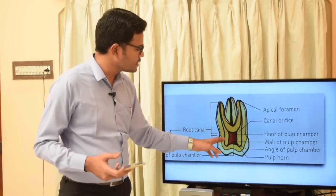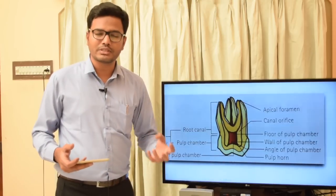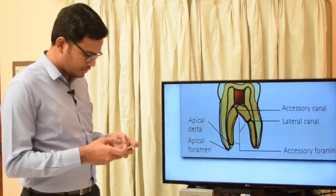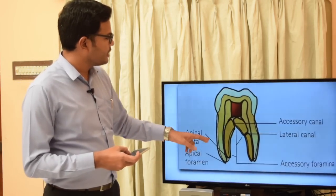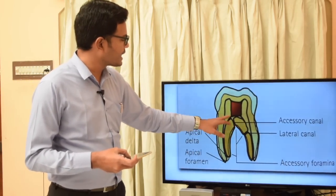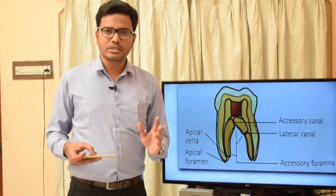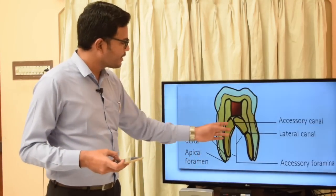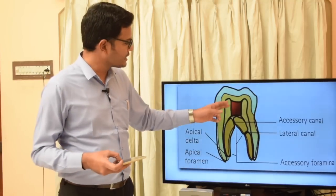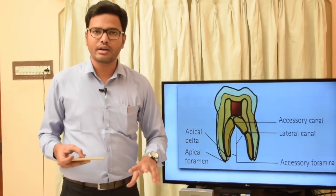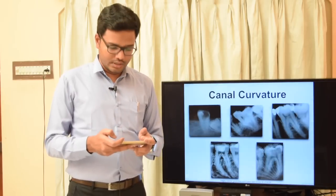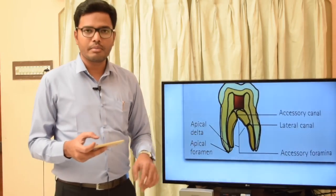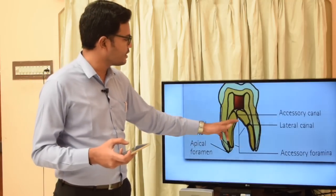You can also see various lateral canals and accessory canals. As stated, lateral canals extend only on the lateral aspect of the root, so all lateral canals come under accessory canals, but all accessory canals cannot be classified as lateral canals. Note that there is only one main apical foramen, but we can have several accessory foramina corresponding to the several accessory canal openings.